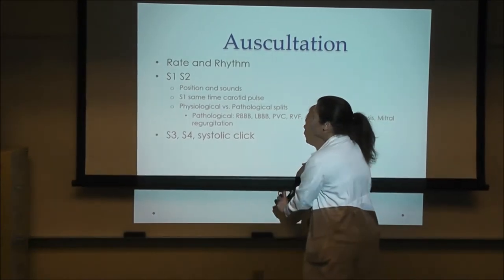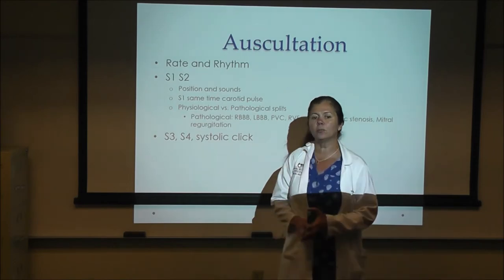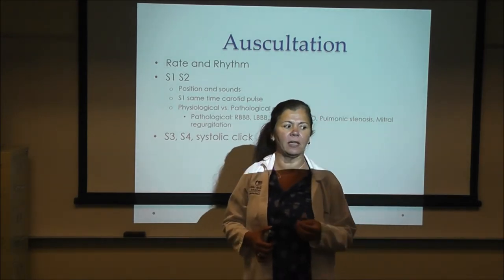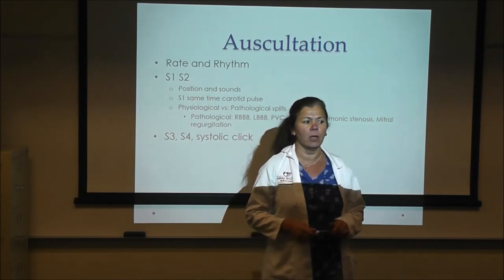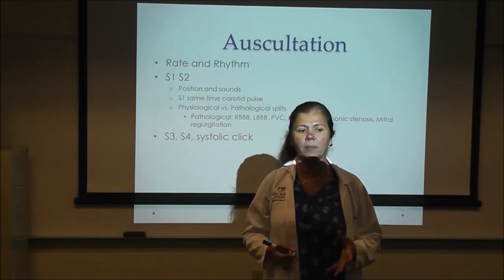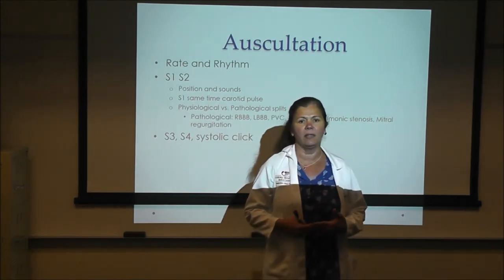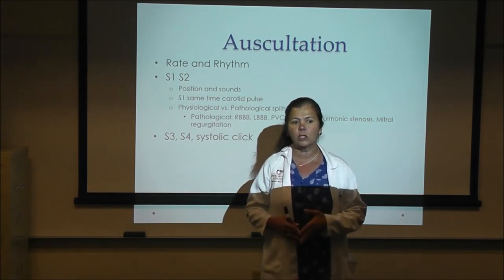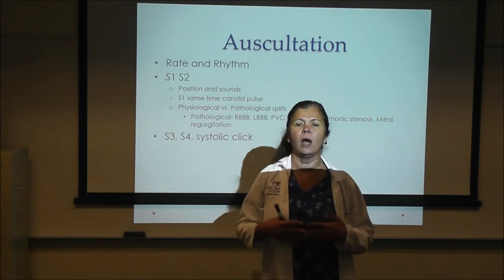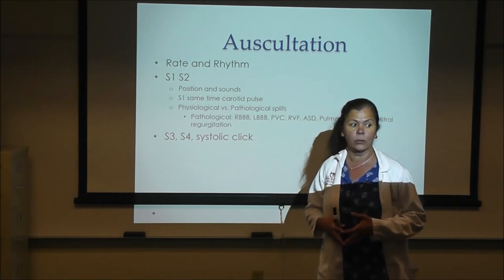S4, on the contrary, is produced by high pressure. High pressure at the level of the ventricles is most likely produced by hypertension, valvulopathy, or cardiomyopathy — including hypertrophic cardiomyopathy, aortic stenosis, or pulmonary stenosis. S4 is always pathological.